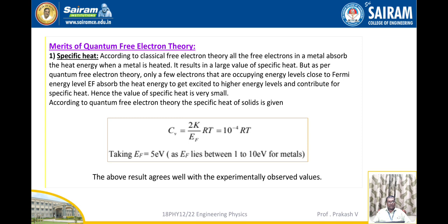According to quantum free electron theory, the specific heat of a solid is given by C_v equal to (2k/E_F) × RT. The value of 2k/E_F is approximately equal to 10^(−4), so the value becomes 10^(−4) RT. Taking E_F equal to 5 eV, as E_F varies between 1 to 10 eV for all metals, the above result agrees well with the experimentally observed values.